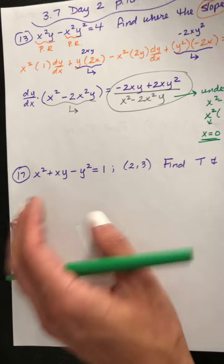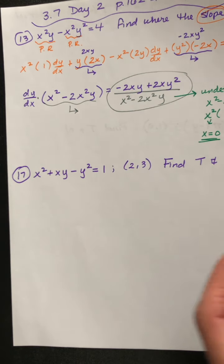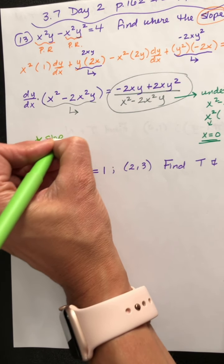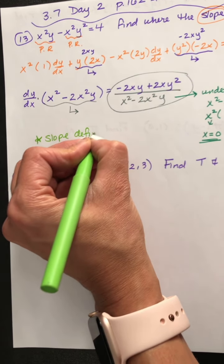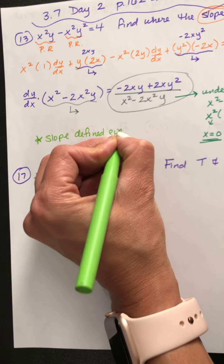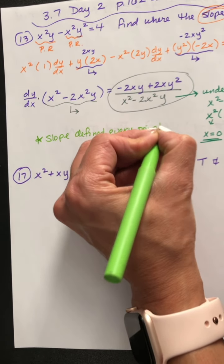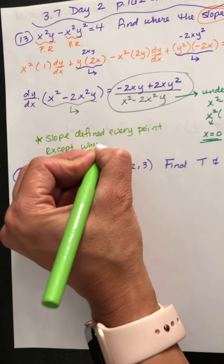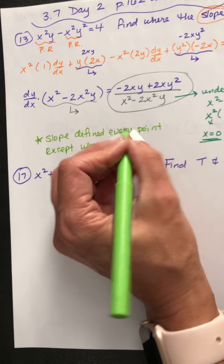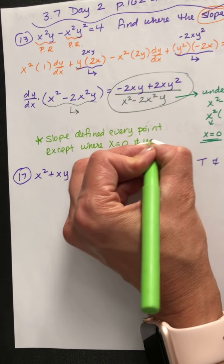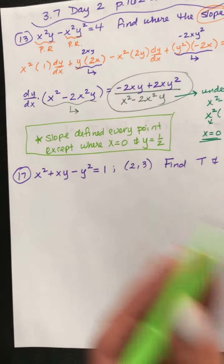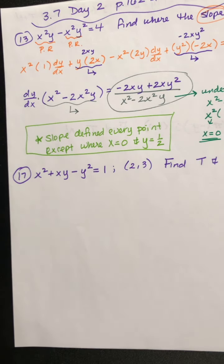So when x equals 0 and y equals one half, the slope is undefined. So we write: the slope is defined everywhere except at x equals 0 and y equals one half.